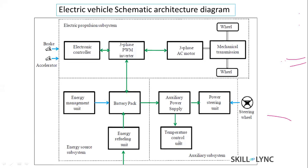For temperature control, vehicles use an air conditioning system. In conventional vehicles the energy for the AC was supplied through the engine, but in the absence of an engine, the energy for the air conditioning system has to be supplied from the batteries. This also draws power from the battery. This is the overall electric vehicle architecture diagram.